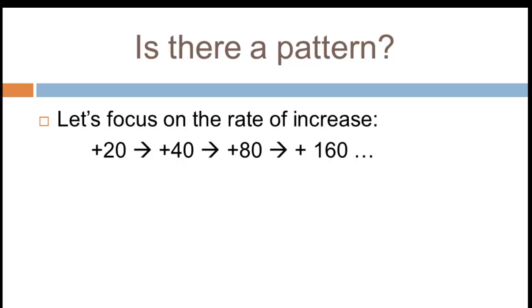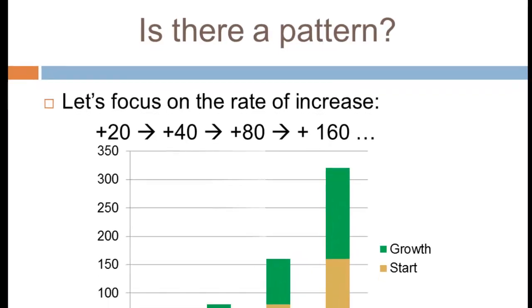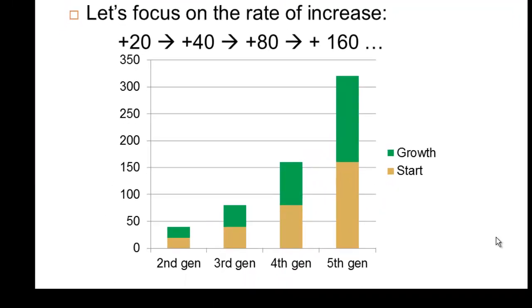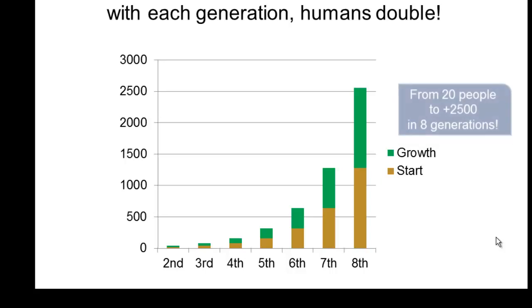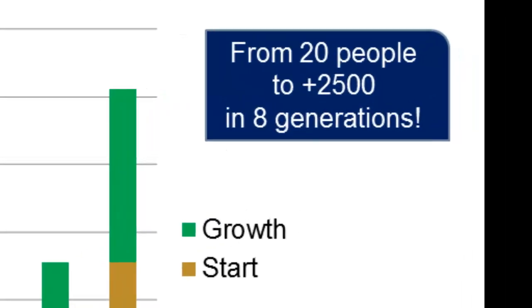From generation one to two we added 20; from two to three we added 40; from three to four we added 80; and from four to five we added 160. With our fertility model this will just continue to happen. When we chart this out, it's not simple growth — this is exponential growth.